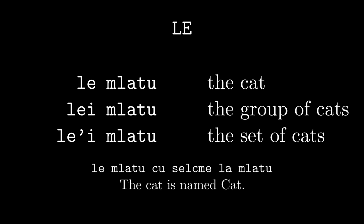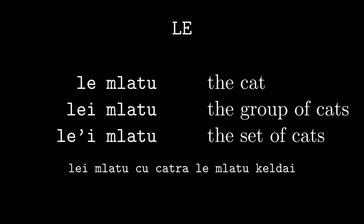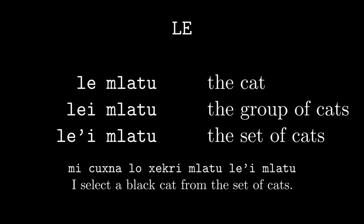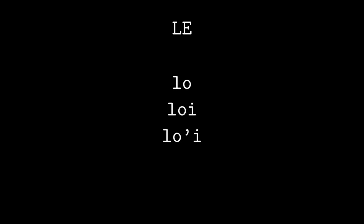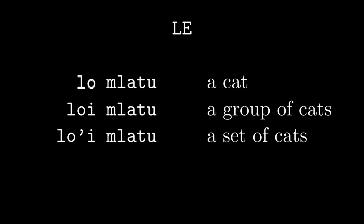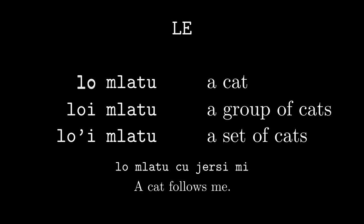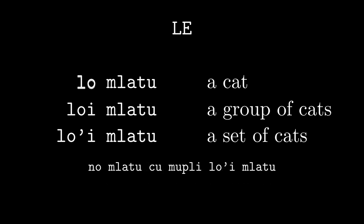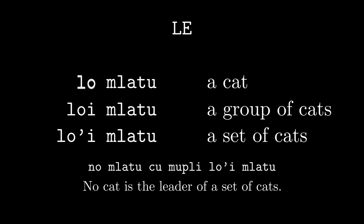Le mlatu sel shmeh la mlatu — 'the cat is named cat.' Le mlatu shu'shatra le mlatu keldai — 'the cats killed the cat toy.' Mi shukhna lo'hekri mlatu le'i mlatu — 'I select a black cat from the set of cats.' For non-specific or general instances, like English article 'a,' we have lo, lo'i, and lo'i. Lo mlatu: 'a cat.' Lo'i mlatu: 'a group of cats.' Lo'i mlatu: 'a set of cats.' Lo mlatu shu'jersi mi — 'a cat follows me.' Lo'i mlatu shu'jersi mi — 'a whole bunch of cats follows me.' No mlatu shu'mupli lo'i mlatu — 'no cat is the leader of a set of cats.'